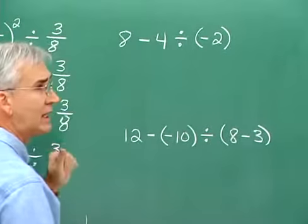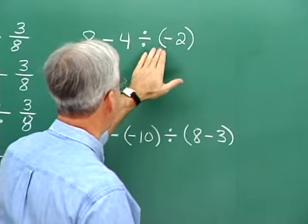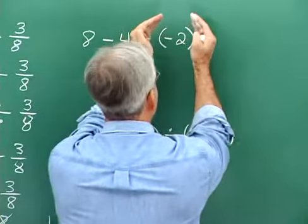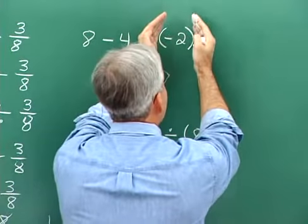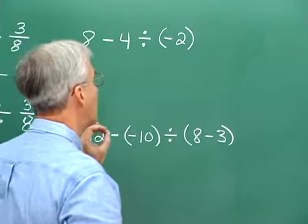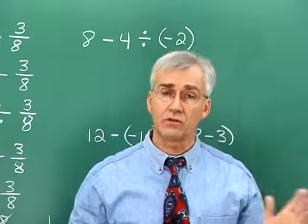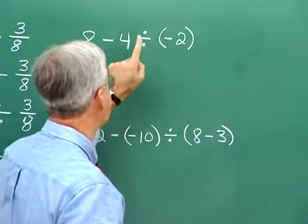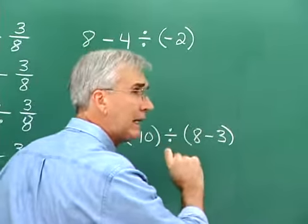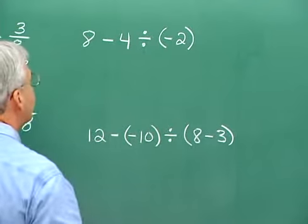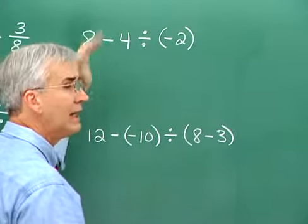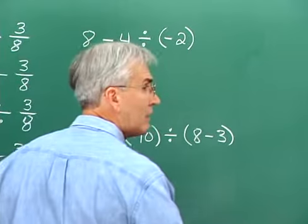Here we have a number of operations indicated, and in parentheses we have negative 2. Our order of operations agreement says to go directly to the parentheses first — but inside this parenthesis, there's nothing to do, it's already in simple form. Then we look for exponents — there aren't any. So the order of operations agreement says to perform multiplications and divisions from left to right. From left to right, we see a division: we're taking the number to the left and dividing by the number to the right. There are two ways to correctly interpret this: 4 divided by negative 2, or negative 4 divided by negative 2. Either one is okay.